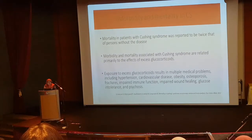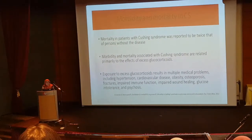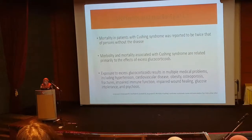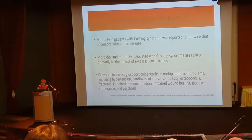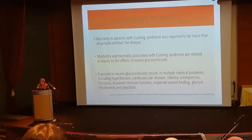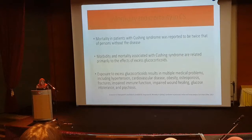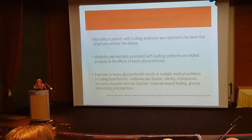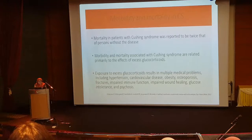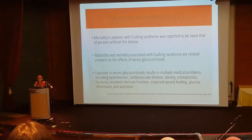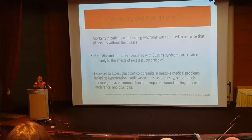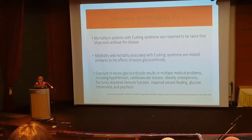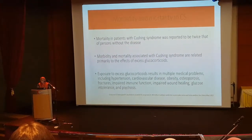So we must educate the public. The mortality in Cushing's syndrome, whether it is iatrogenic or endogenous Cushing's, was reported to be twice that of patients without the disease. So the risk is double. The mortality is usually associated with Cushing's syndrome, which relates to excess glucocorticoid.